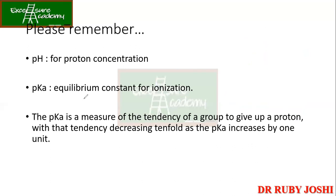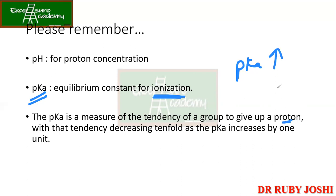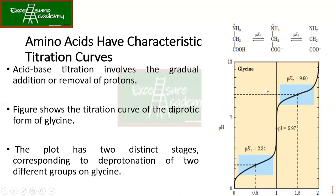pKa is the equilibrium constant for ionization. It is a measure of the tendency of a group to give up a proton, with that tendency decreasing tenfold as pKa increases by one unit. So if pKa increases, the tendency to give up a proton becomes less.